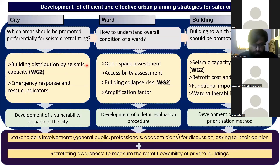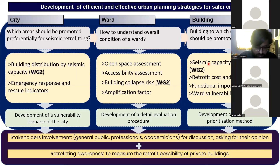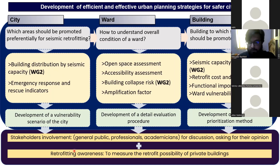We divided the city into three different levels: city scale, ward level, and individual building level. At the city level, we tried to identify the seismic performance of buildings and assessed emergency response and rescue situations. At the ward level, we assessed open space, accessibility, building collapse risks, and to some extent ground motion, which is a joint collaboration of working group two. For individual buildings, we developed a prioritization method to identify and rank the most preferable buildings for improving seismic performance using retrofitting techniques. We also tried to develop awareness among the community and stakeholders, including the general public, professionals, and academicians, through seminars like this.